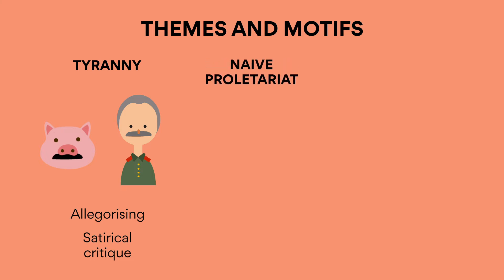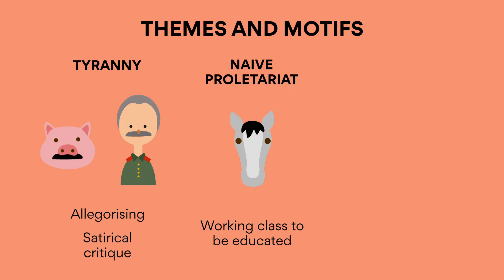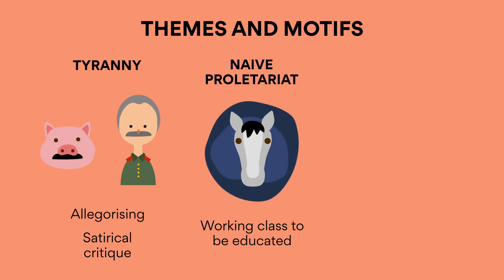Naive Proletariat. Animal Farm explores the need for the working class to be educated, as the inability of the farm animals to question Napoleon's authority directly leads to the perpetuation of his oppression. Thus, Orwell presents to his readership that the working class may suffer not only due to a dictator's abuse of power, but also from their own naive unwillingness to question the intentions of authority.